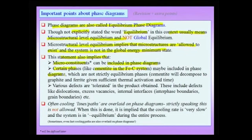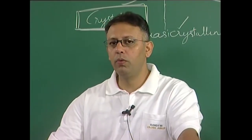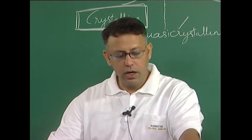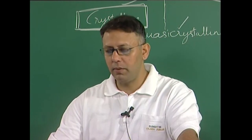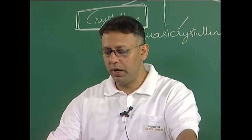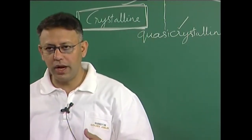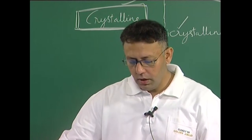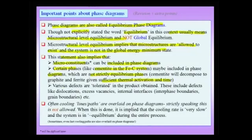If you want to be very strict, you will note that cementite is not strictly an equilibrium phase. In other words, cementite will decompose to graphite and ferrite given sufficient thermal activation and time. That means cementite in the truest sense should not be included in a phase diagram, but whenever we draw an iron-carbon phase diagram, cementite is included because it is a reasonably metastable phase that continues to exist as cementite for long periods of time. Various defects are tolerated in the product obtained — dislocations, excess vacancies, internal interfaces including inter-phase boundaries and grain boundaries.